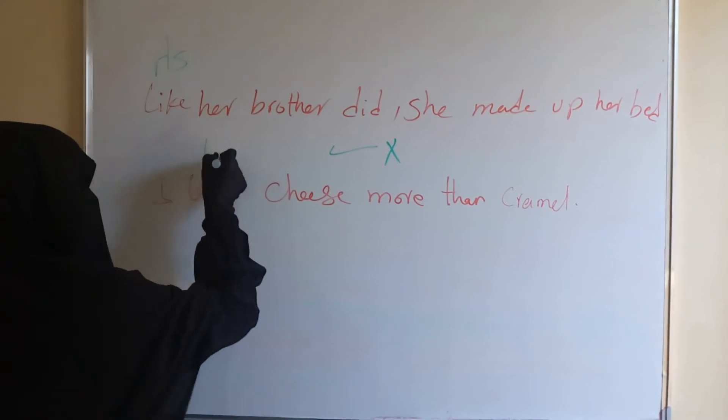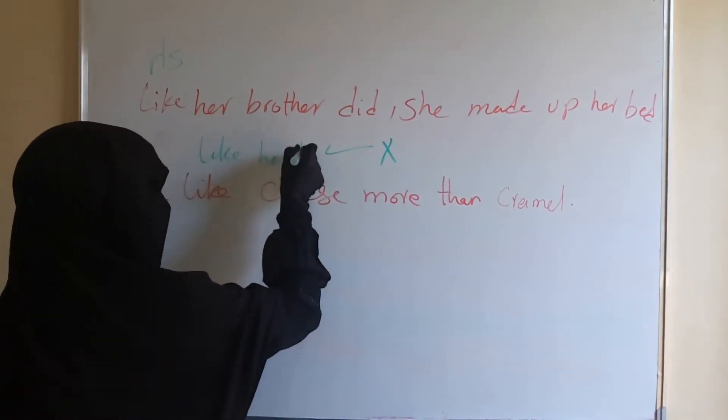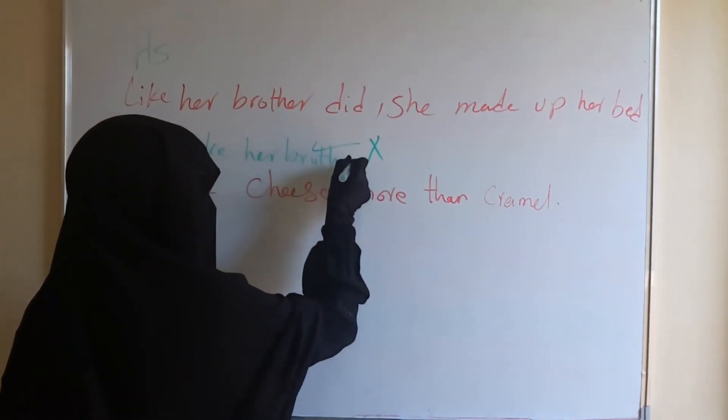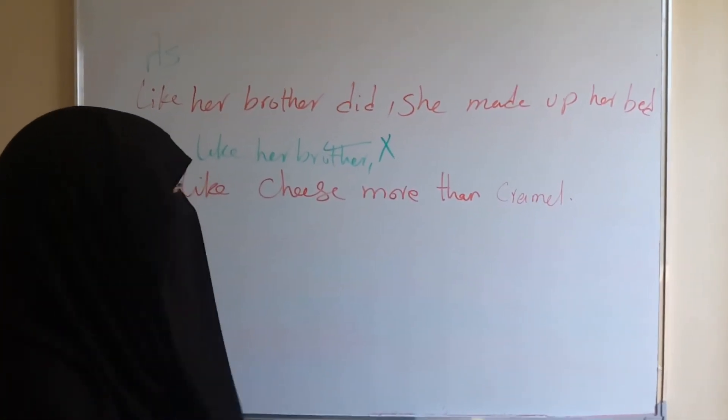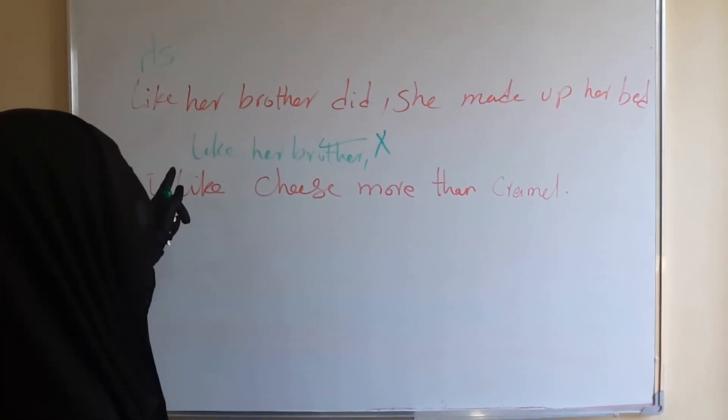But without 'that', 'like her brother', for example, 'she made her bed' - okay, it's perfect. But 'as', in order to make it like a close with being perfect.